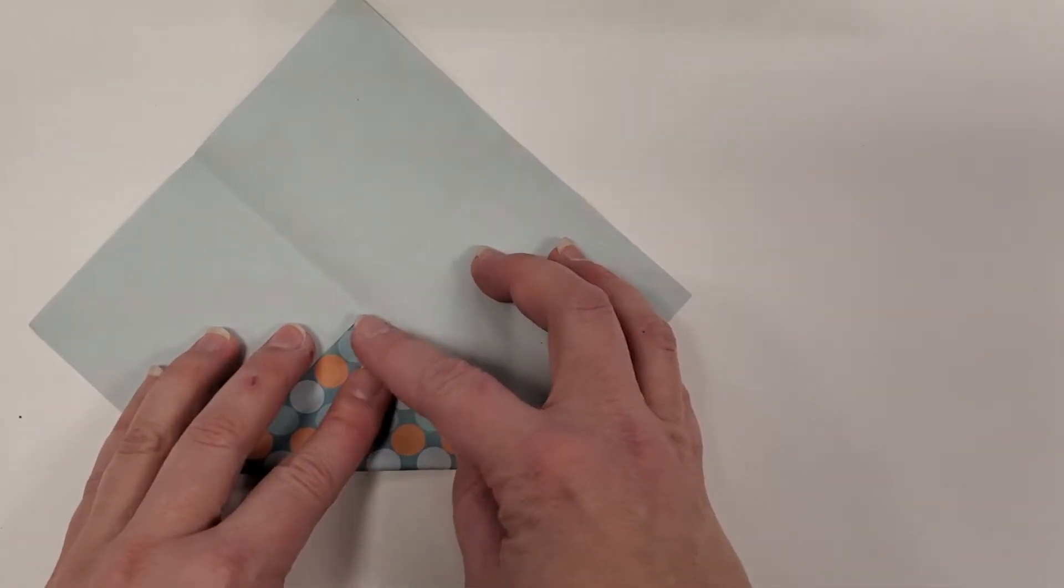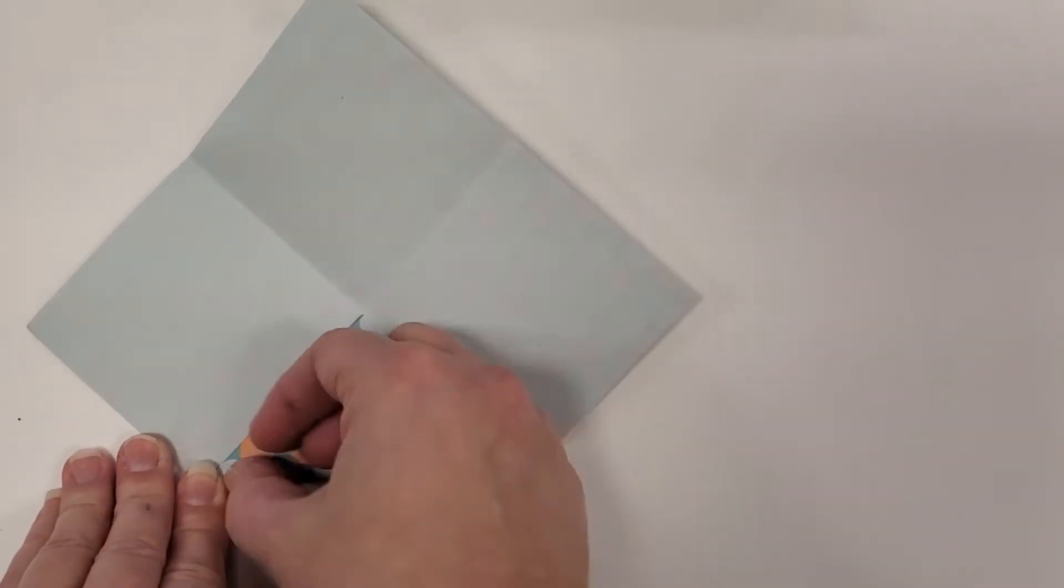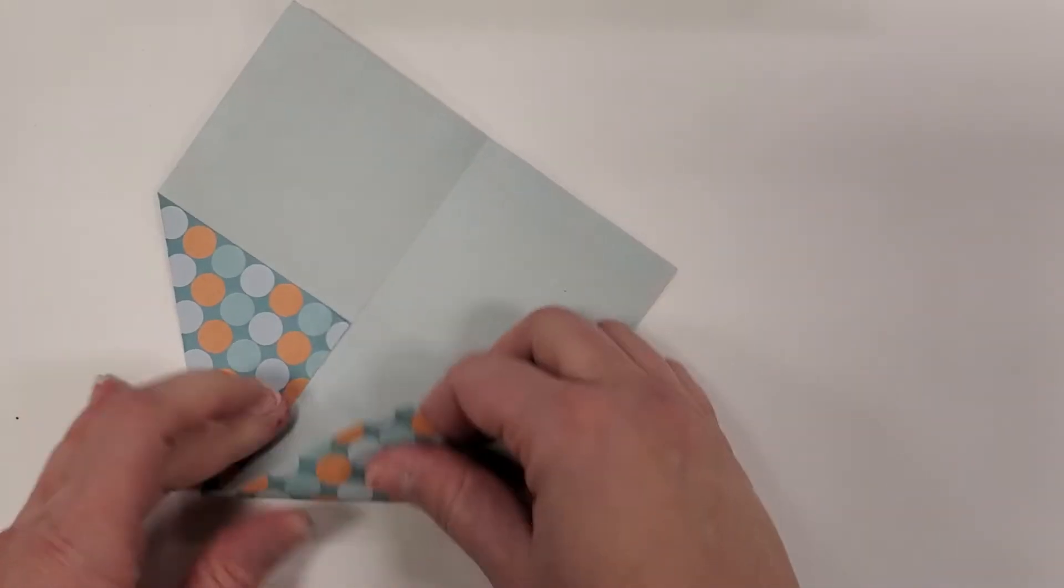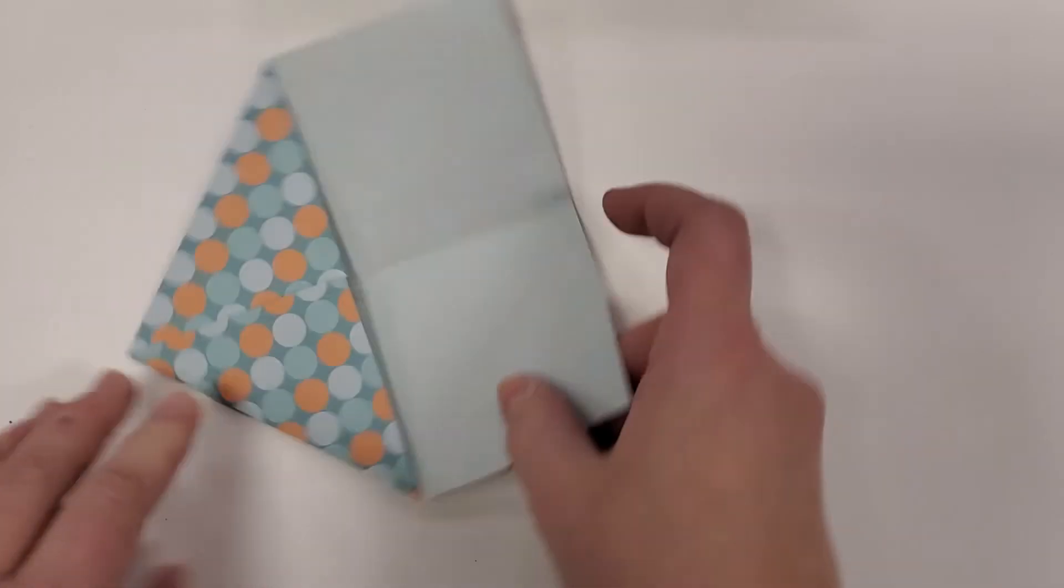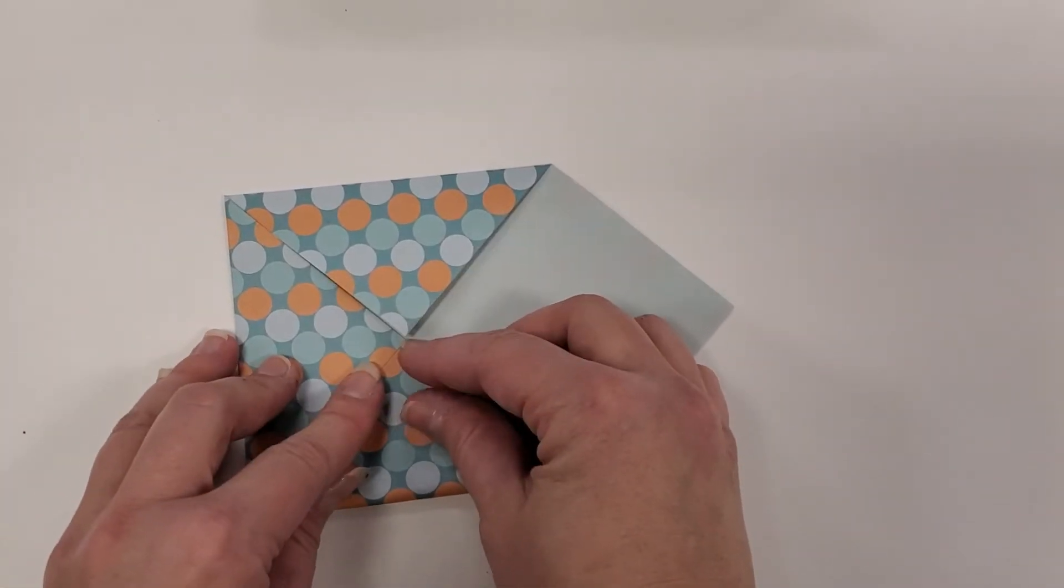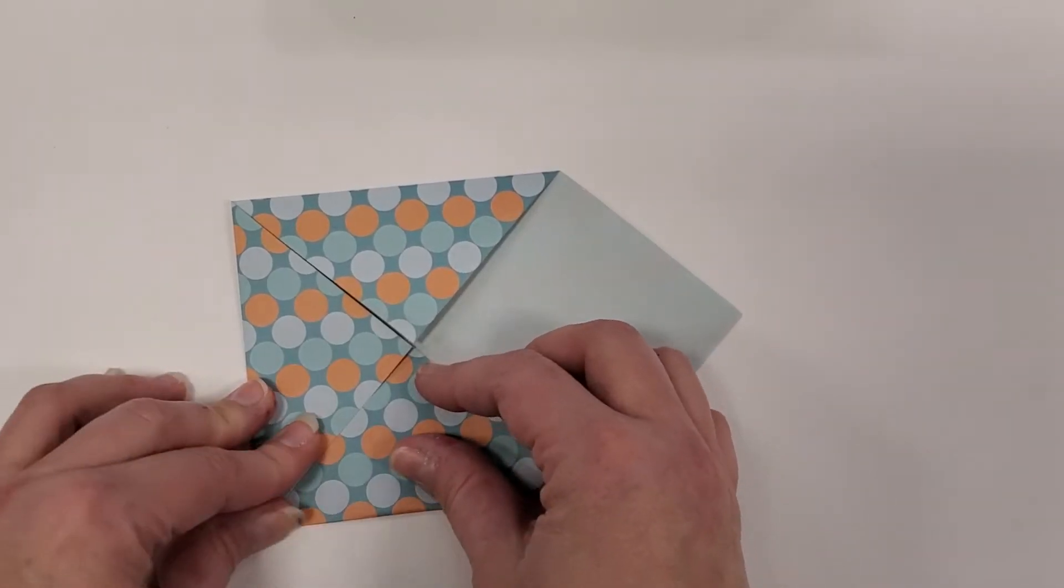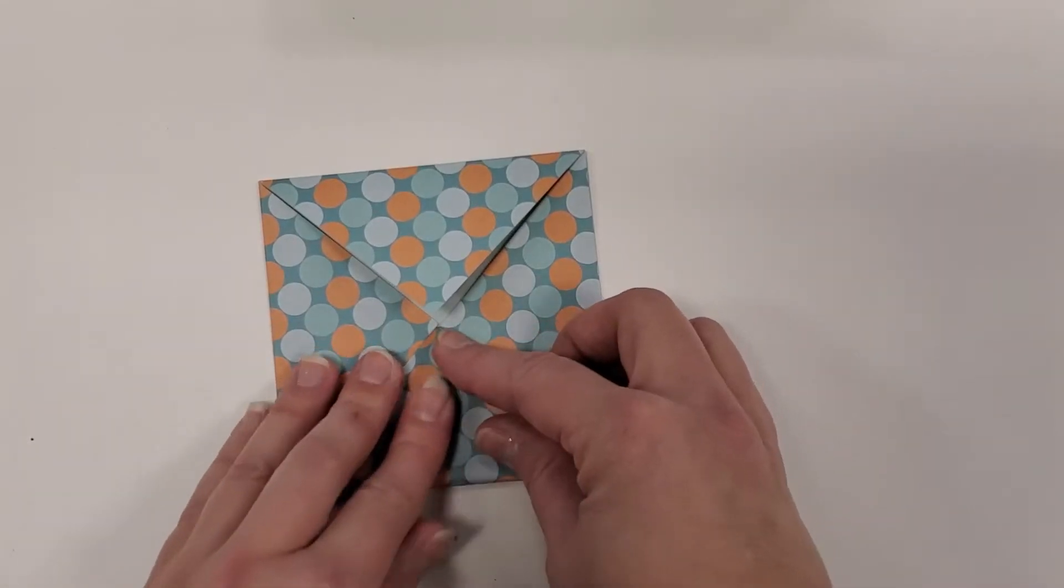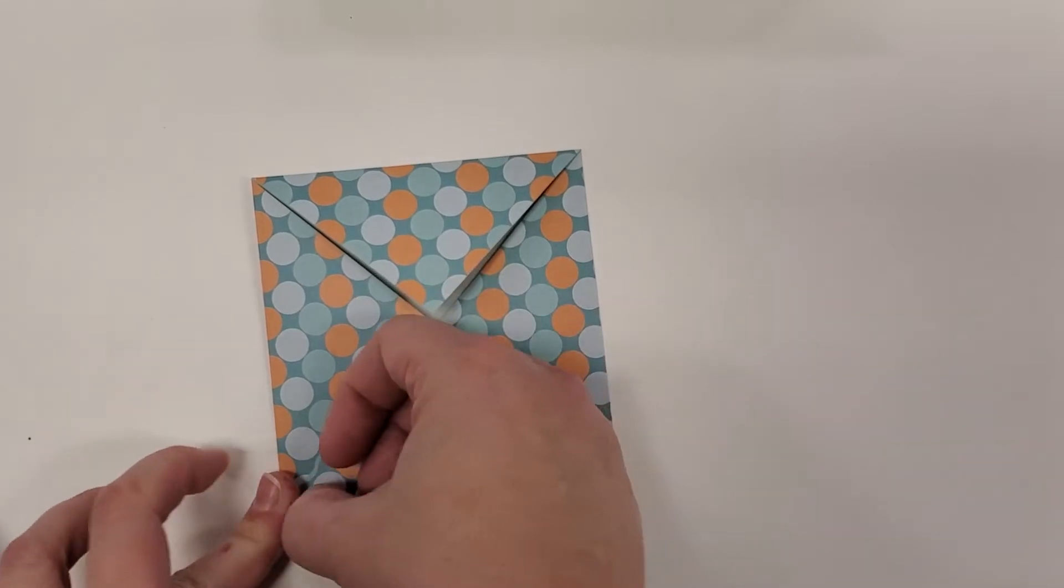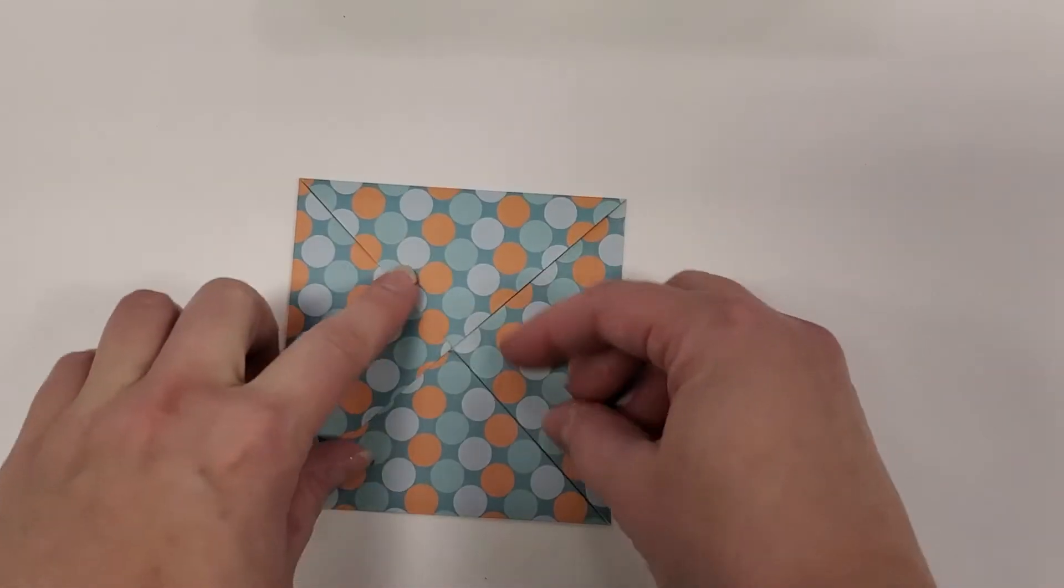Then we're going to make a blintz fold, meaning we're going to neatly fold all of our corners to the center and you want to be really careful about this. This can easily look really junky if you're not careful about how to fold your corners.